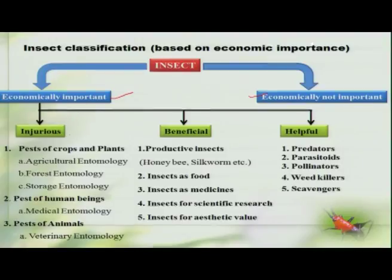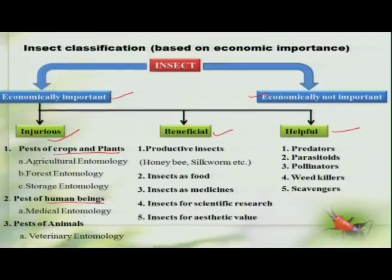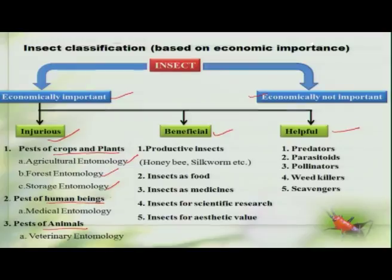Under the economically important group, the insects are broadly categorized as the injurious group, the beneficial group, and the helpful group. The injurious group mainly includes those insects which cause physical and physiological damage to our crop plants, human beings, and animals. Those which cause damage to agricultural crops are referred under agricultural entomology; those which are pests to forest plants under forest entomology; those which cause damage to storage grains under storage entomology. Similarly, insects which directly or indirectly cause damage or annoyance to human beings are referred under medical entomology, and those causing similar damage to animals under veterinary entomology.